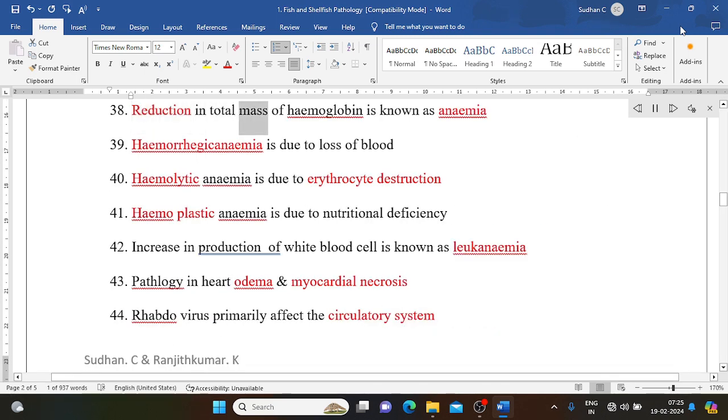Reduction in total mass of hemoglobin is known as anemia. Hemorrhagic anemia is due to loss of blood. Hemolytic anemia is due to erythrocyte destruction. Hemoplastic anemia is due to nutritional deficiency. Increase in production of white blood cell is known as leukemia.